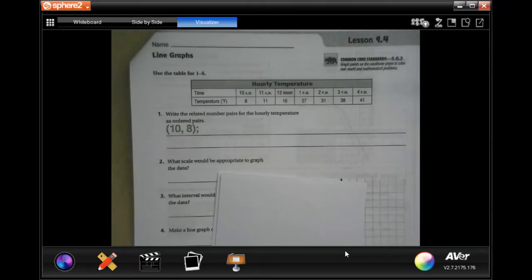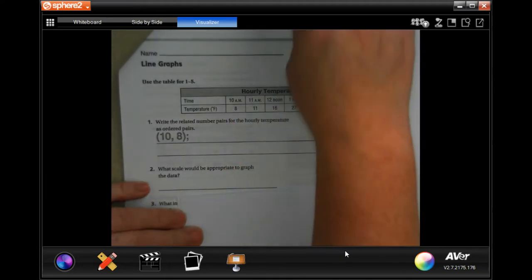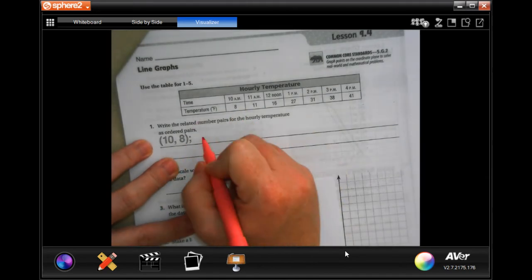Hey y'all, welcome to fifth grade, Topic 9, Lesson 4. We're going to go ahead and get started. Number one just wants us to write the ordered pairs that are on the chart, so we're just going to do the top, and on the bottom it already did 10, 8 for us.